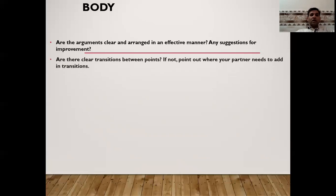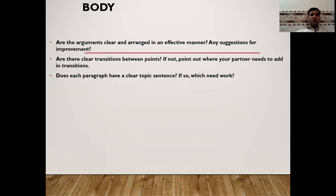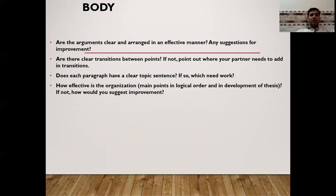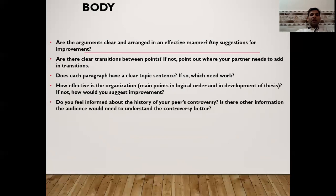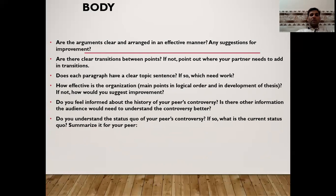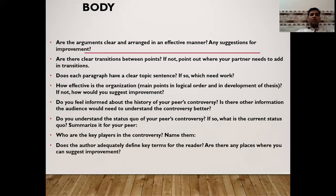For the body: are the arguments clear, organized, and arranged in an effective manner? Any suggestions for improvement? Are there clear transitions between points — if not, point out where transitions need to be added. Does each paragraph have a clear topic sentence? How effective is the logical order and development of the thesis? Do you feel informed about the history of your peer's controversy? Do you understand the status quo? Who are the key players — name them. Does the author adequately define key terms?